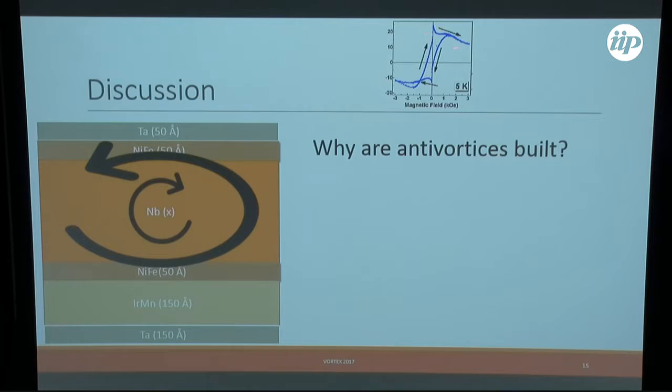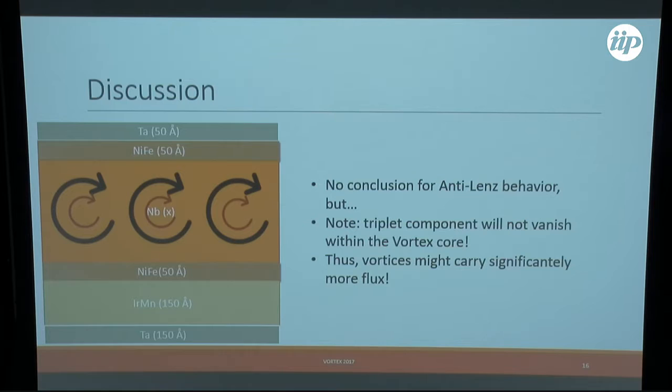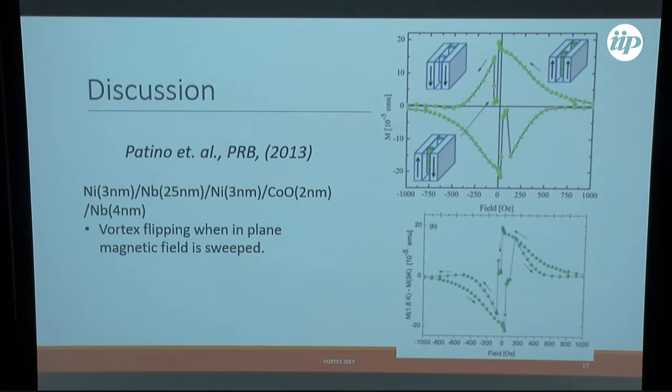The question is of course, when we now continue with this sweep, why do we build anti-vortices that somehow decrease this effect? Why this is, we do not know. We have no conclusion for this anti-Lenz behavior, but it is really important to note that the triplet component shouldn't vanish in the center of the vortex. I'm not aware of, we tried to find some work on that - maybe somebody knows here of a good theoretical work on such systems, how the vortices behave. We didn't find any of that. It is also interesting to note that there are studies of similar systems, like the one from Edgar who gave a talk yesterday, where you actually find effects which are equally weird. Yesterday, when Edgar was talking about the vortex flipping, this is also a thing that is very difficult to understand how this might happen. This is certainly something that is quite similar.